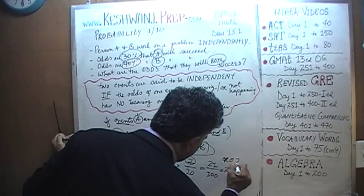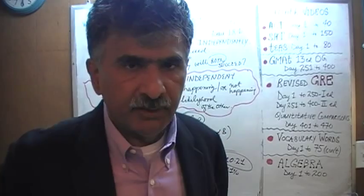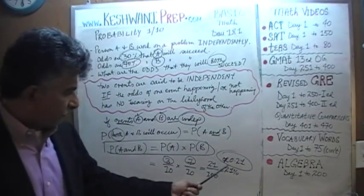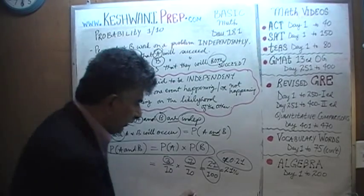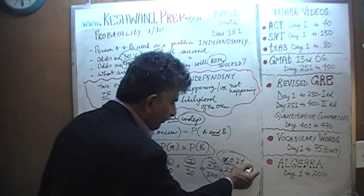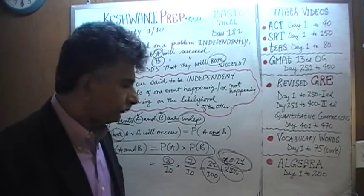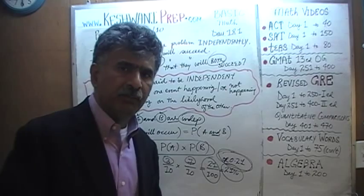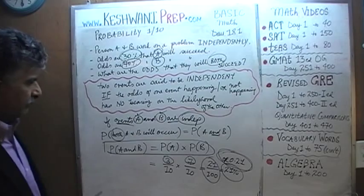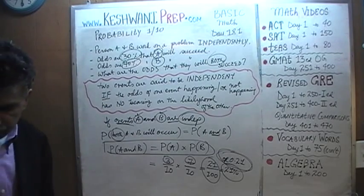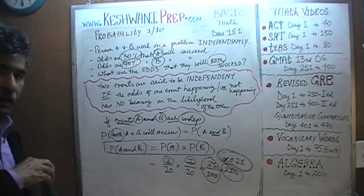The answer is 0.21. However the answers are presented on the exam, that's what you pick — either as a fraction 21/100, a percentage 21%, or a decimal 0.21. It's the exact same thing. Let's do one more, keeping in mind that we're dealing with independent events.